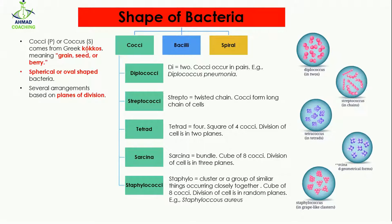Cocci is a plural word while coccus is a singular word. This word comes from the Greek word 'kokkos,' which means grain, seed, or berry. So the cocci bacteria are actually spherical or oval shaped bacteria.